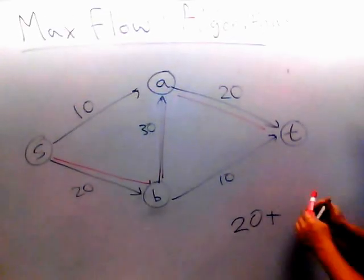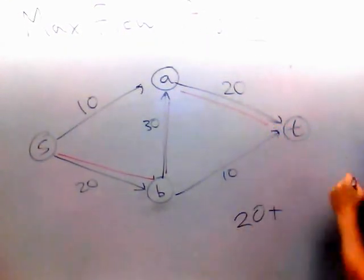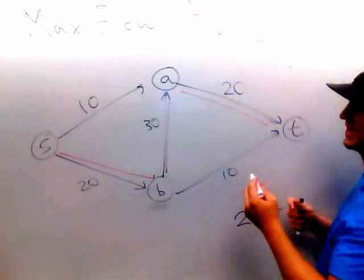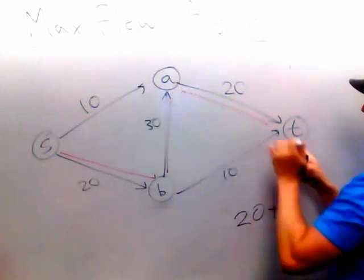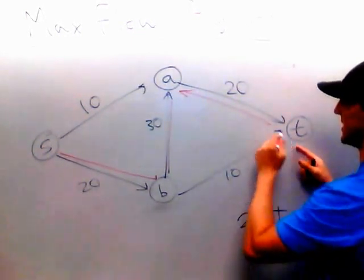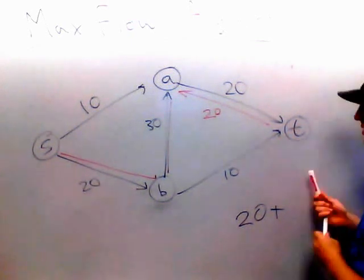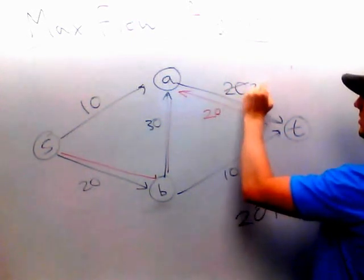So what we're going to do is, the algorithm says, if you pass 20 along this edge, now you're going to add a back edge. If 20 traverses from A to T, now there's going to be an edge from T to A with weight 20 on it. And this edge, oops,